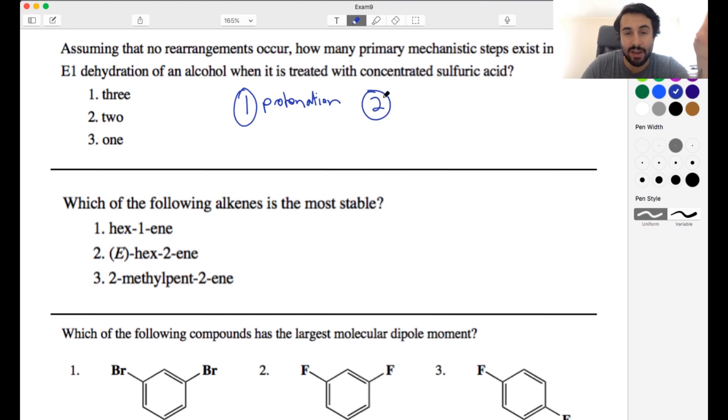Step two, so E1 means that leaving group leaves. So water has to leave. We've protonated the hydroxyl. Now we have a water molecule that can act as a leaving group. So in E1D, water leaves. And then step three, that's when we get pi bond formation. It is an E1 dehydration. It is an elimination. So we're going to get a pi bond there. But it does have to happen in these three discrete steps. So this is a three-step process.